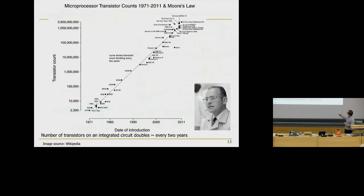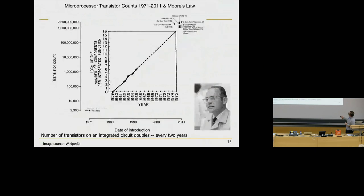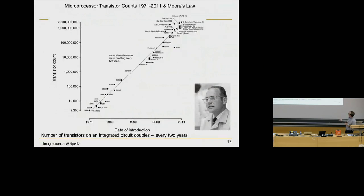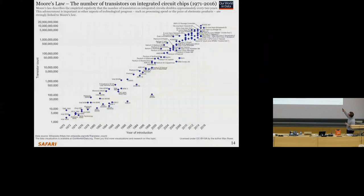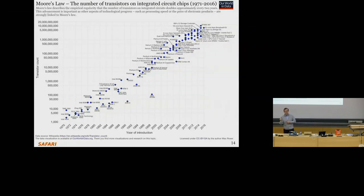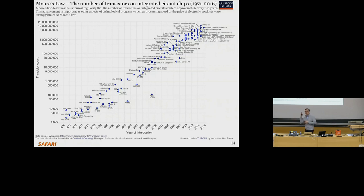This graph is from 2011, and you can see the curve fits still pretty well compared to 1965. From 2016, we're more than 20 billion transistors. Moore's Law — the ability to reduce transistor size — has enabled us to put many, many transistors, which translates to many, many gates. Now you have a direct relationship between transistors and gates, so you can implement many, many logic functions.